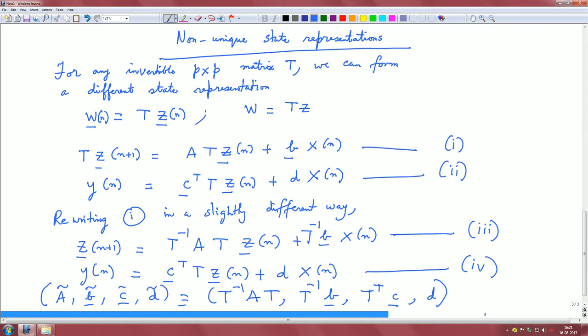Our original parameters that we had as A, b, c transpose, and d are now in this form, linked by a transformation T. Now, if you ask the question how many such possibilities of invertible matrices can you find? Infinite. Therefore, what can we conclude? State variable representation is not unique.